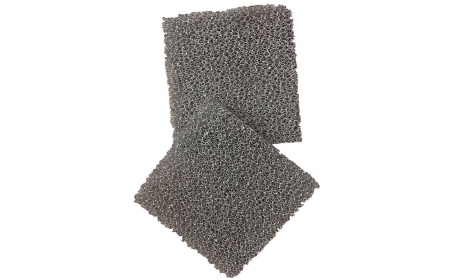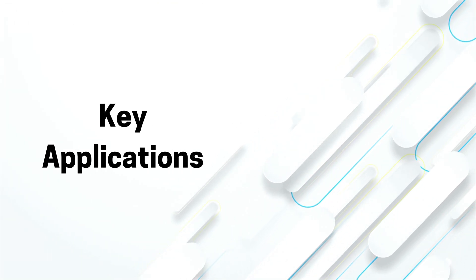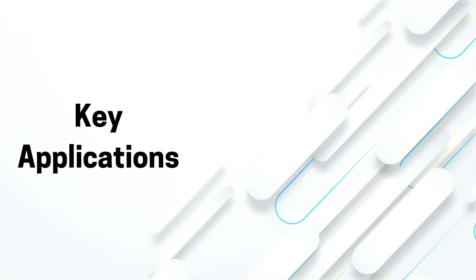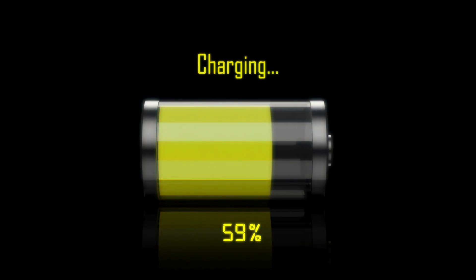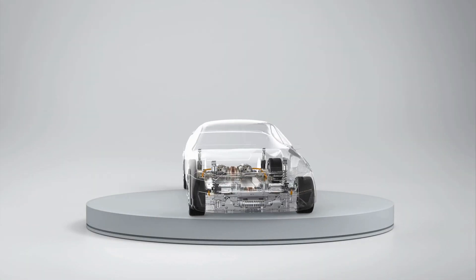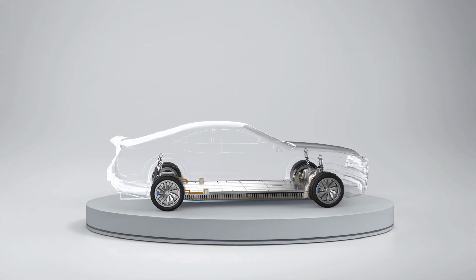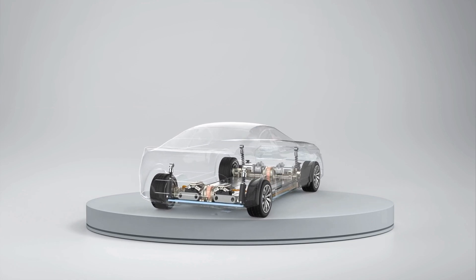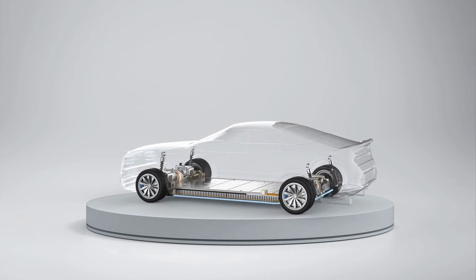Now that we know what nickel foam is and how it's made, let's explore some of its key applications. One of the most exciting uses of nickel foam is in energy storage. It's used in the electrodes of batteries, especially in electric vehicles. The high surface area of nickel foam allows for more efficient charge and discharge cycles, leading to better battery performance.